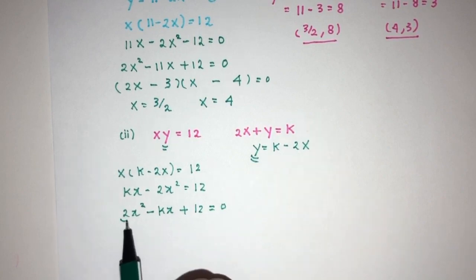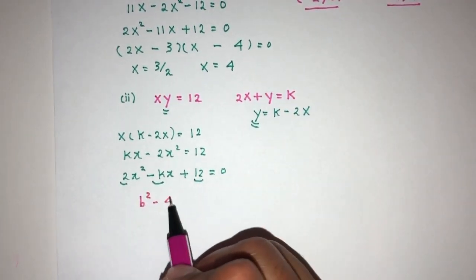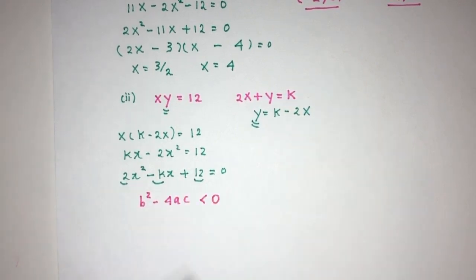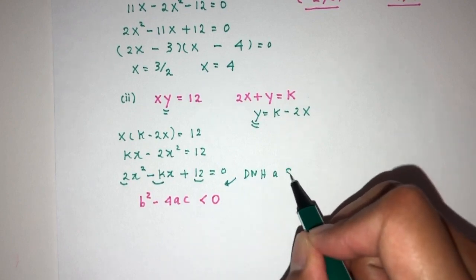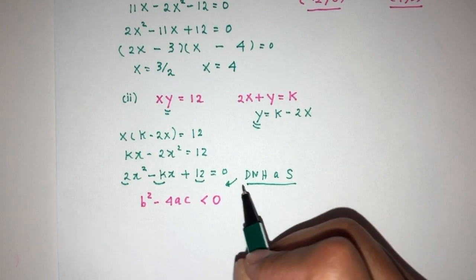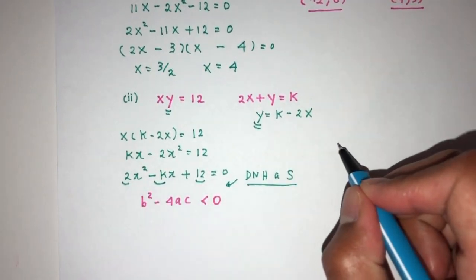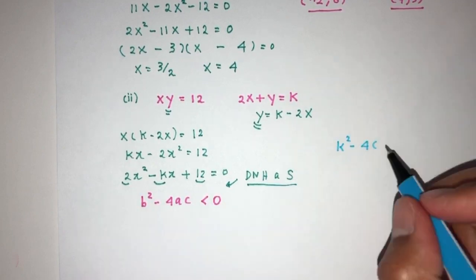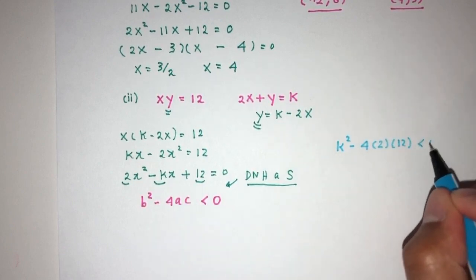Here a equals 2, b equals negative k, and c equals 12. If the line does not intersect the curve, there is no real solution, which means the discriminant b squared minus 4ac must be less than 0. This condition — discriminant less than zero — means no solution, and we must know this result.